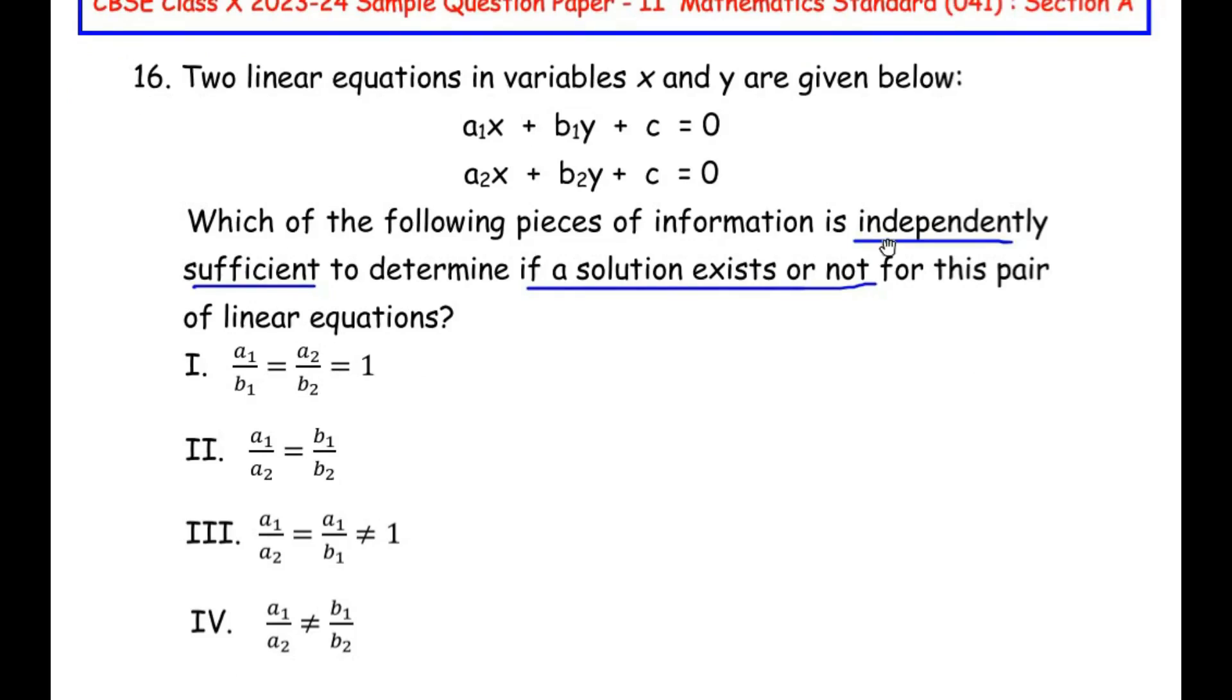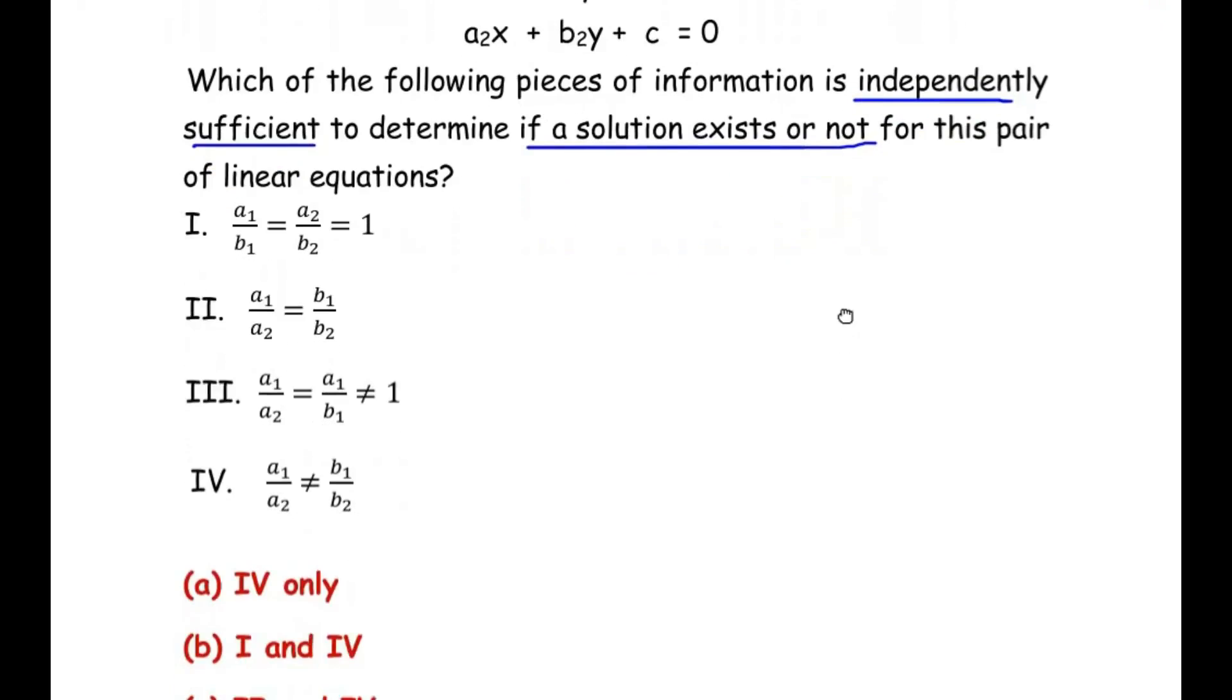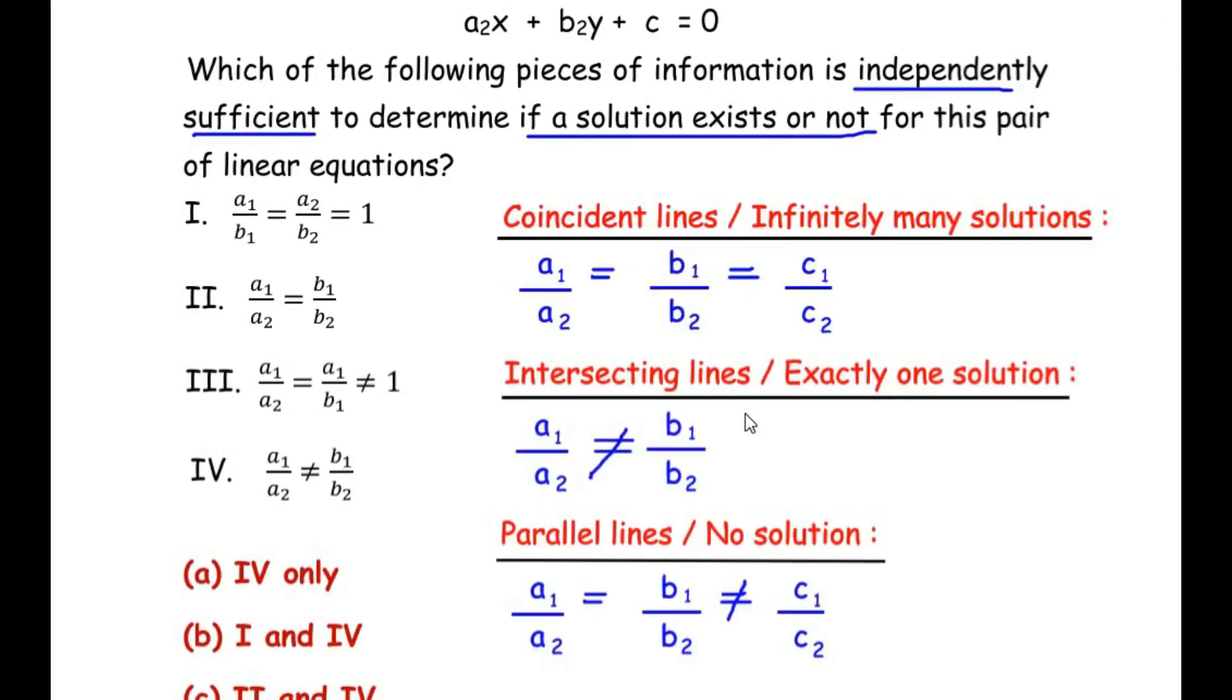Let me begin by writing the conditions first. These are the three conditions: for coincident lines, for intersecting lines, and for parallel lines. Now let us try to write the coefficients of line one and line two in the form of proportion.